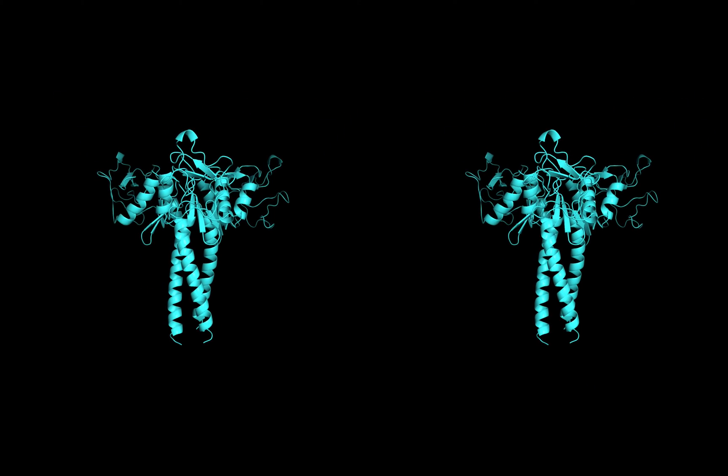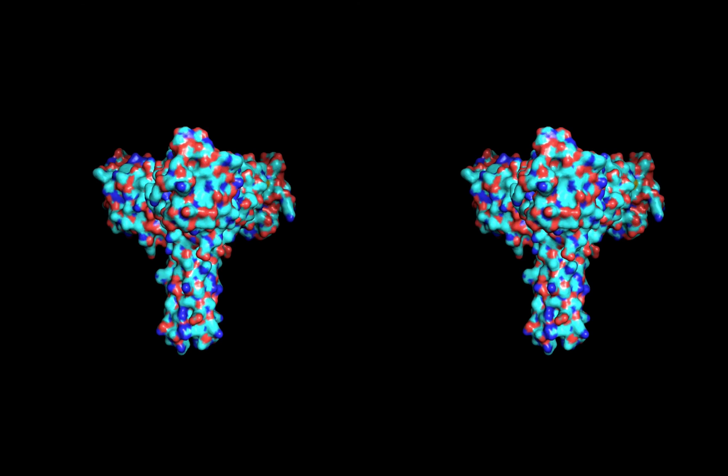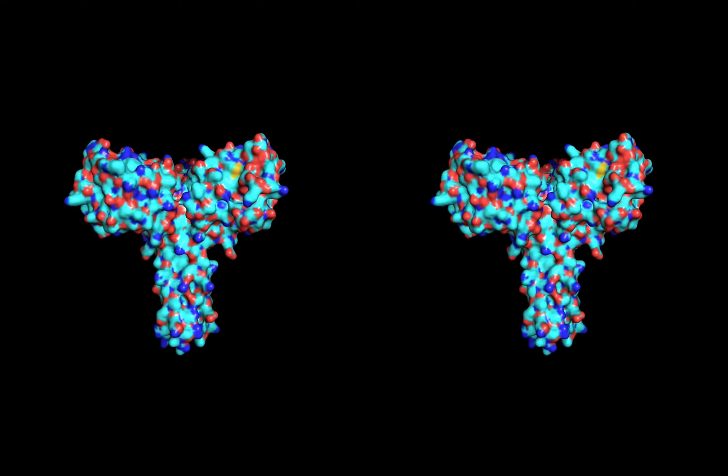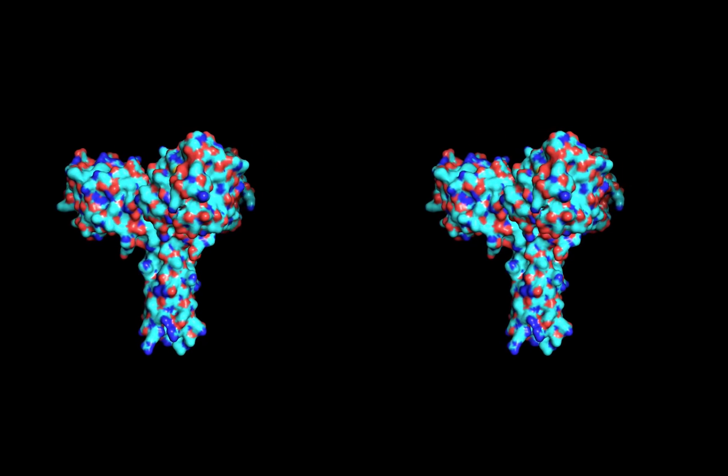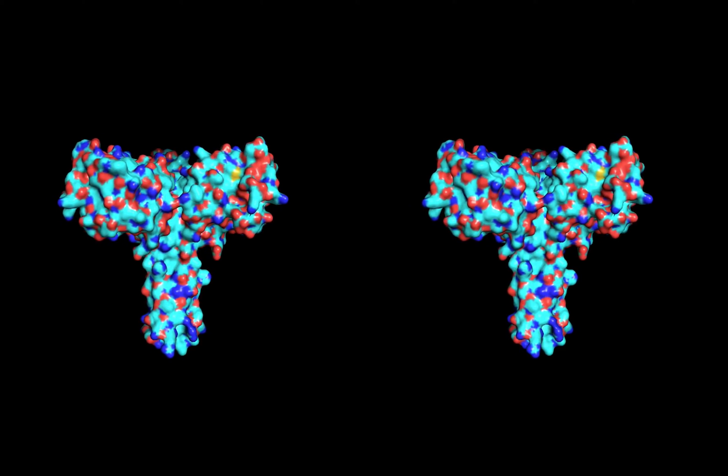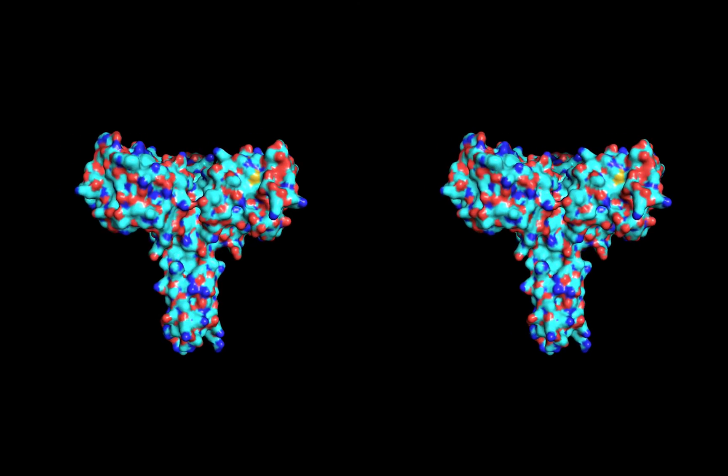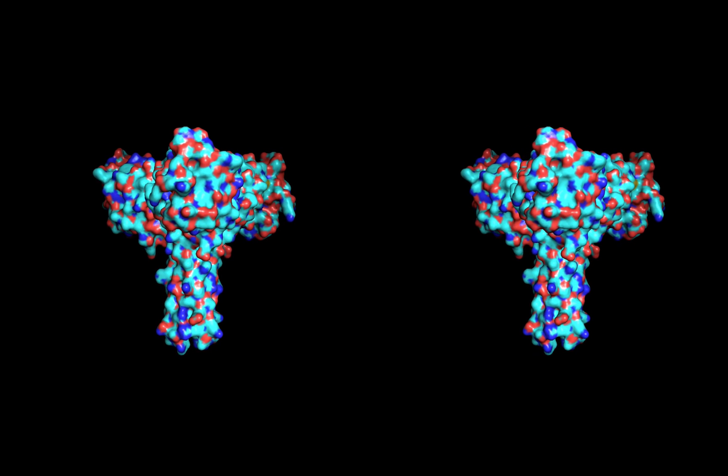Another very common way to render a protein is by showing the surface. This traces the outside edge of the protein. Notice in some spots on this protein there are little holes where there are no amino acid residues and this makes a gap.